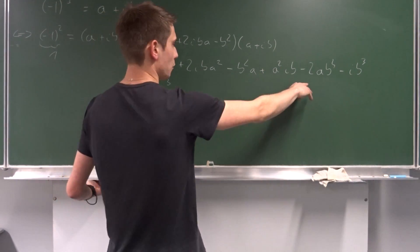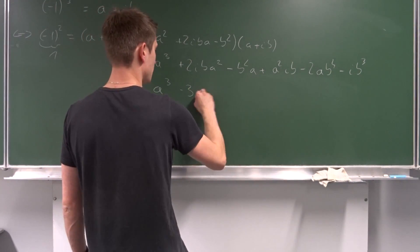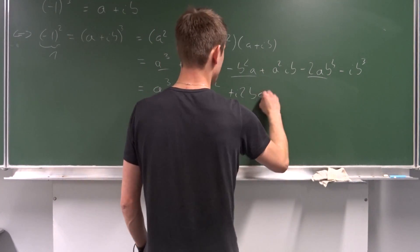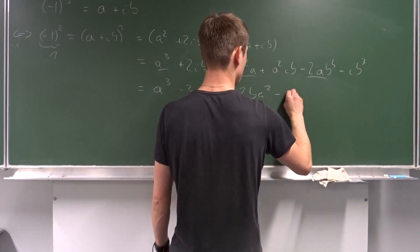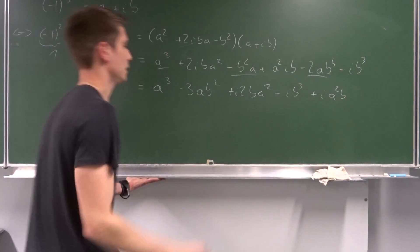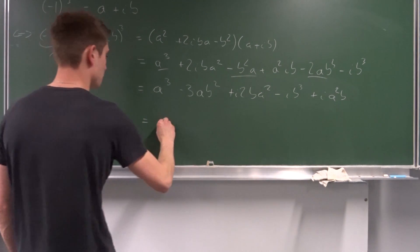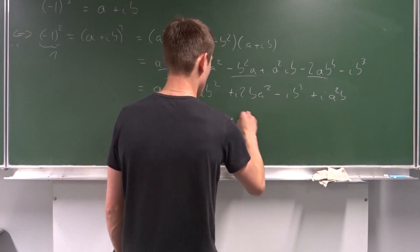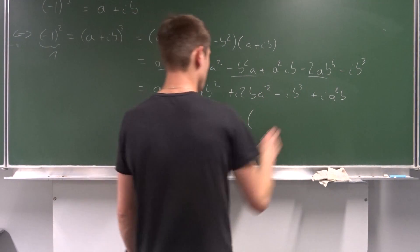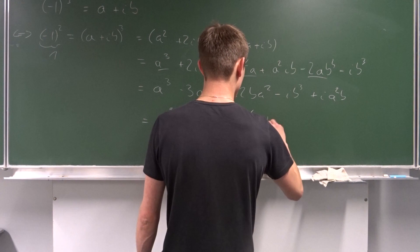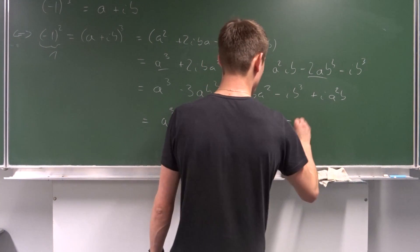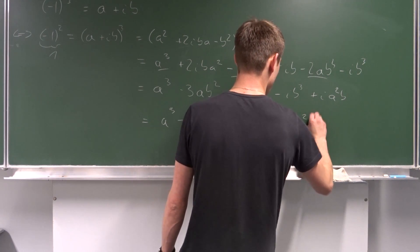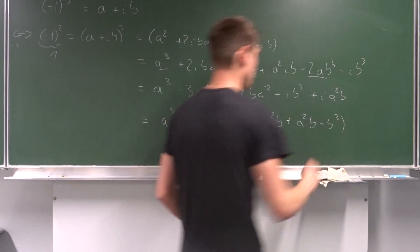Collecting terms, we get minus 3ab squared, and for the imaginary part: two i·b·a squared minus ib cubed. Factoring this out, the full expansion is a cubed minus 3ab squared, plus i times three a squared·b minus b cubed.